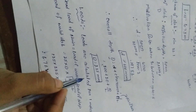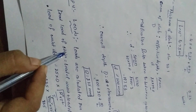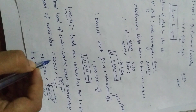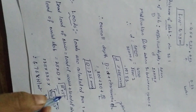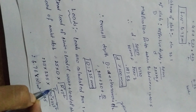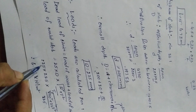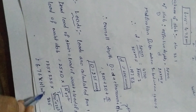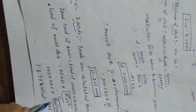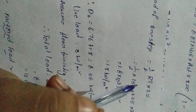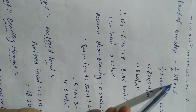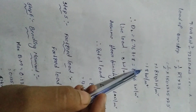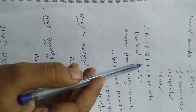Step 4: Loads calculated per meter length. Load on waist slab equals 25 × D × √(R² + T²) / T. With D = 225 mm, R = 150 mm, T = 225 mm, this gives 6.76 kN/m². Load of one step equals (R/2) × T × 25, giving 1.84 kN/m².